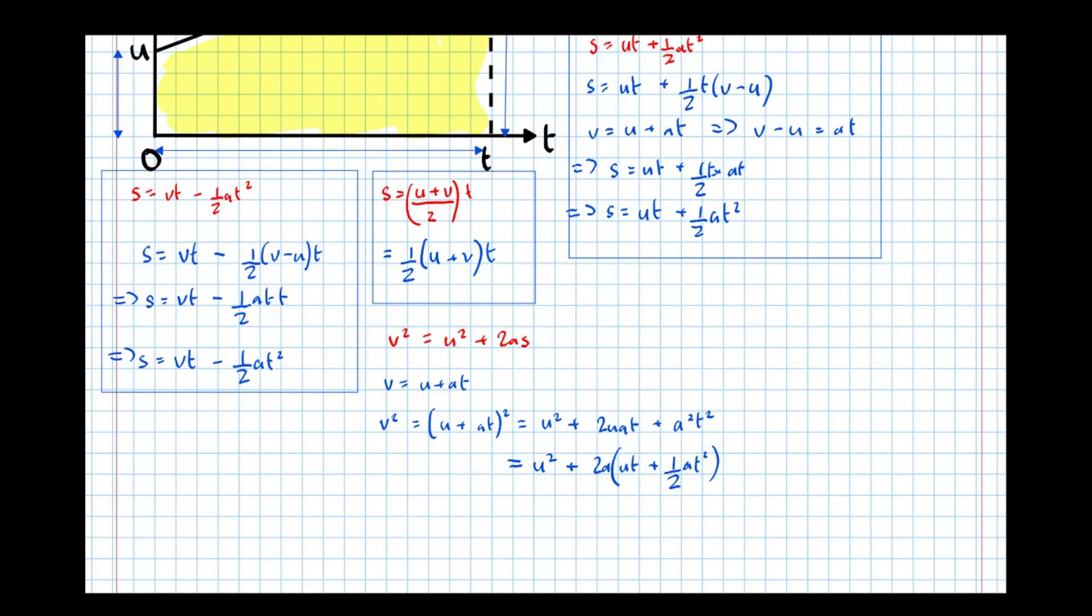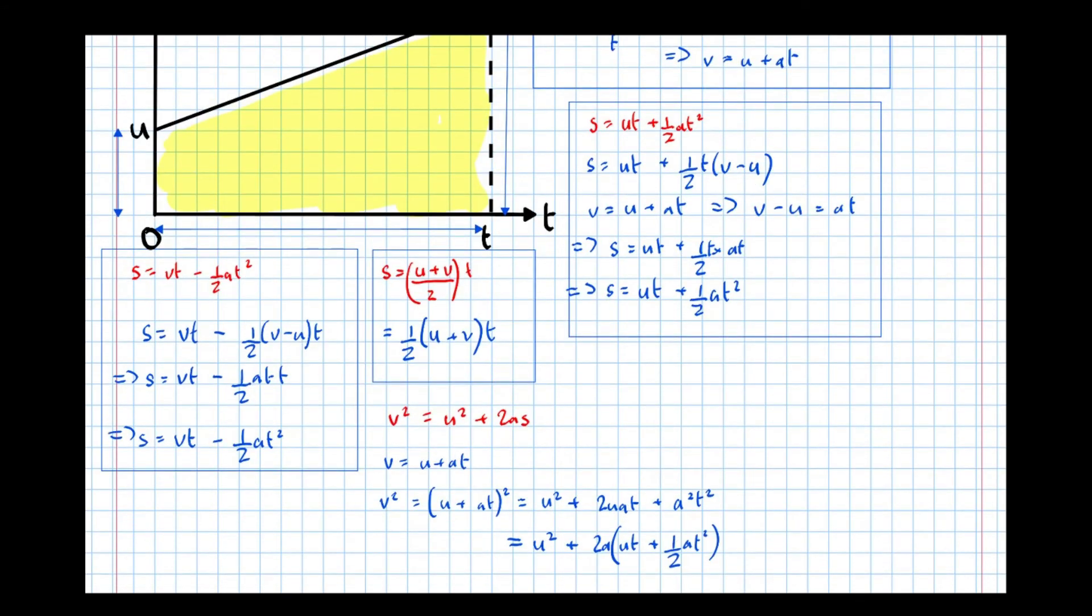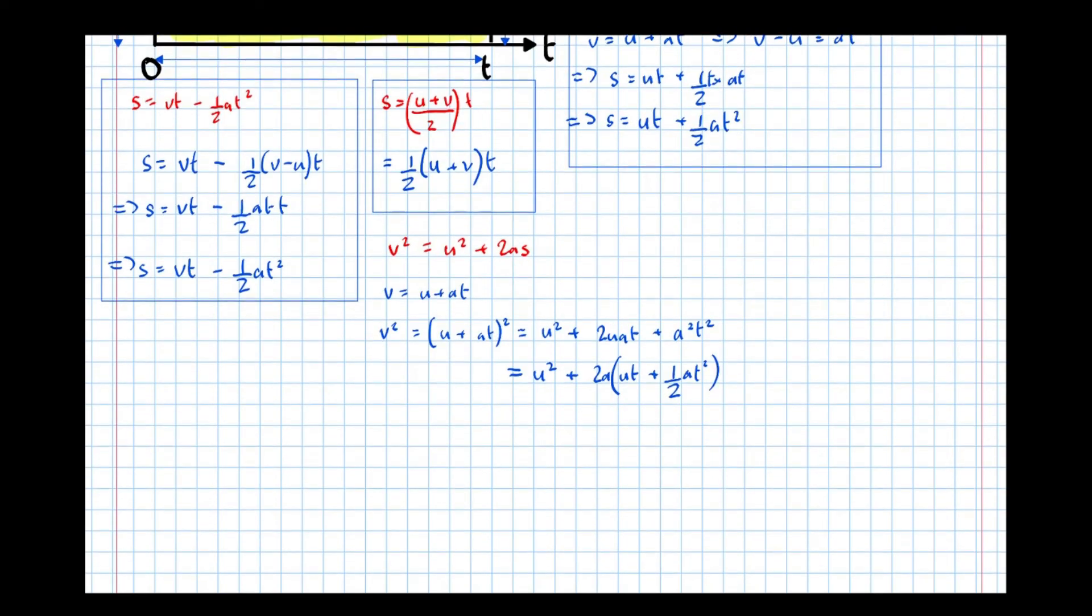And hopefully you recognize this part of the equation here. That's S from a previous equation. Look directly above, S equals U T plus a half A T squared. We've got that now. V squared equals U squared plus 2 A S, which means that V squared equals U squared plus 2 A S as required. And there's the derivation of the final one.